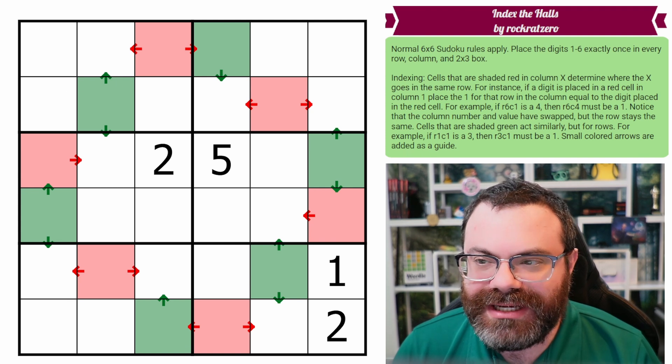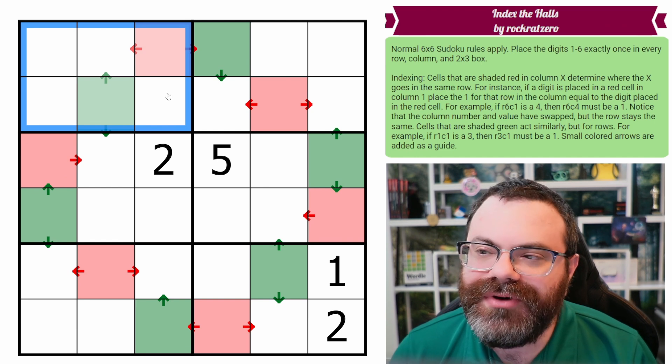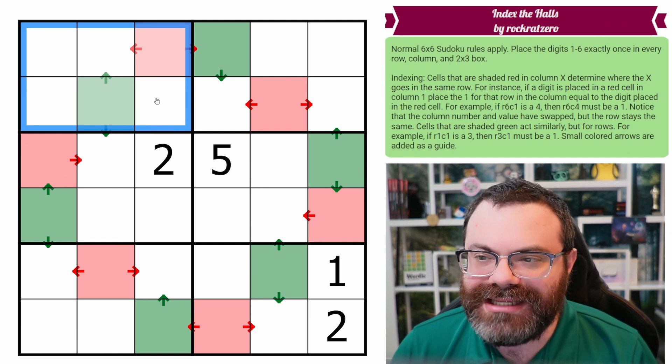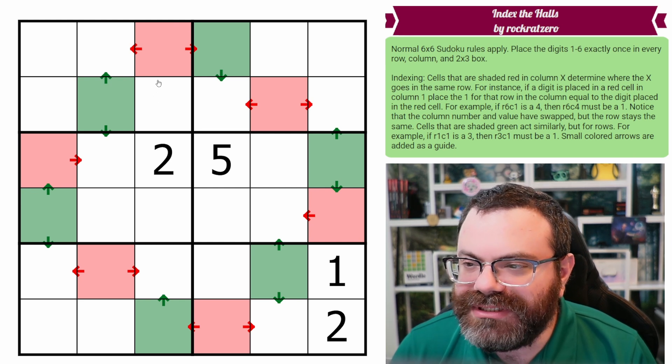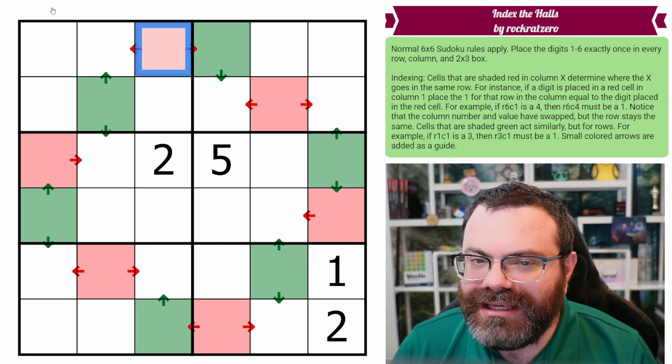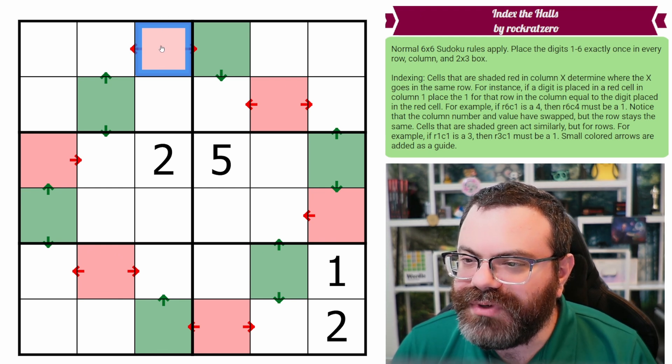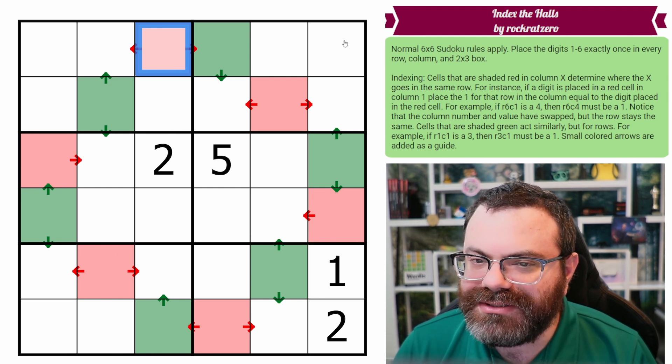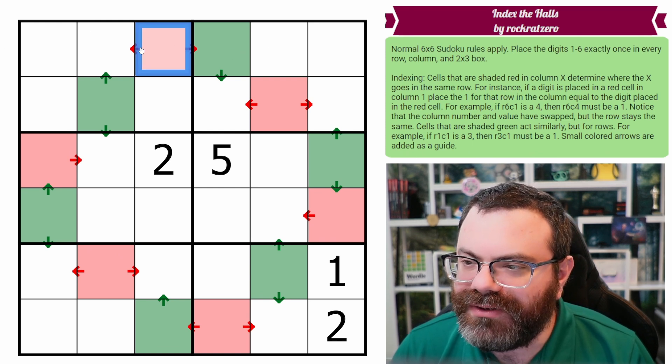So we have normal 6x6 Sudoku rules. That means in every row, every column, and every 2x3 box, we are placing the digits 1 to 6 exactly once each. We also have indexing cells. Cells that are shaded red in column x, so this is column 3, determine where the 3 goes in the same row, or where that x goes in the same row.